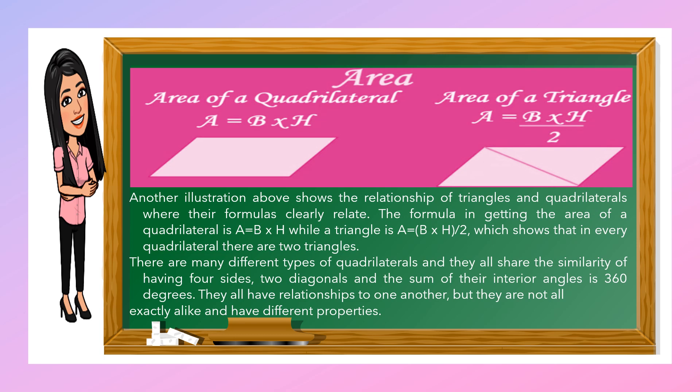Area equals base times height (A = B × H). For a triangle, area equals base times height divided by 2 (A = B × H ÷ 2). It is clearly stated that when you divide the area of a quadrilateral, you can get the area of a triangle, which shows that in every quadrilateral there are two triangles.